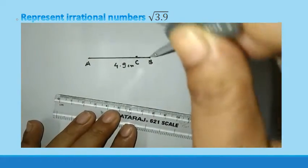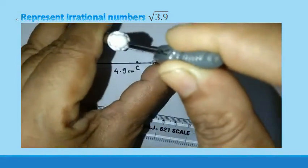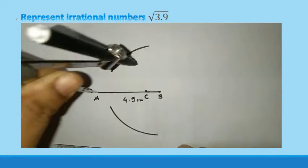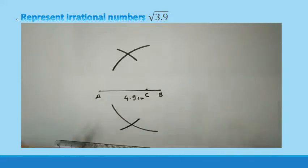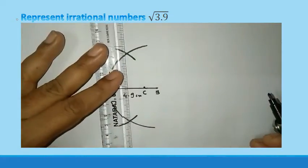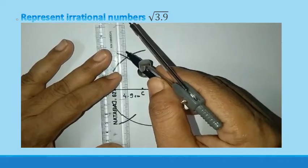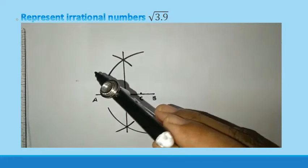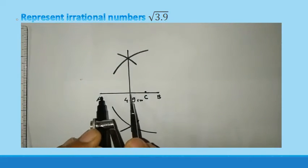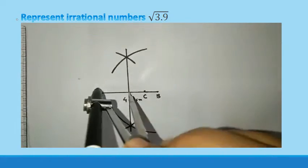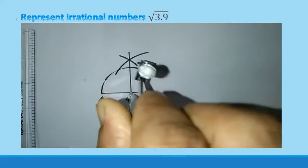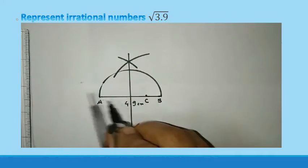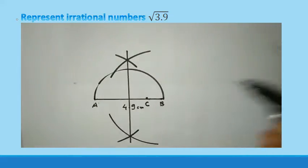Now we will find out the perpendicular bisector of this line segment. And you are aware in the lesson construction we have studied. So this is the perpendicular bisector of AB which is 4.9. Now with this radius see here this is the radius draw semicircle which joins in B.